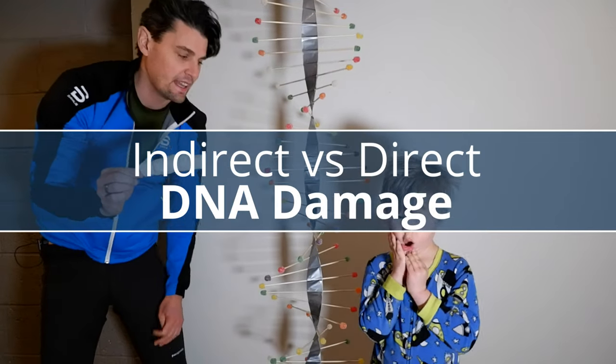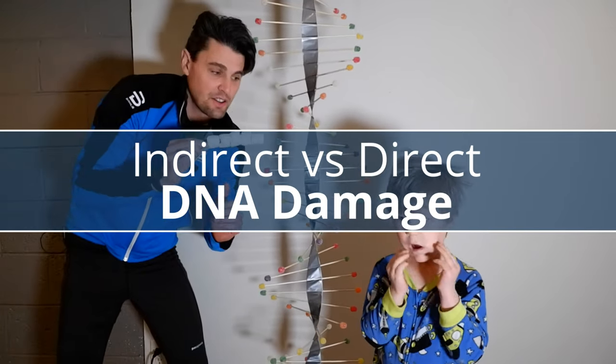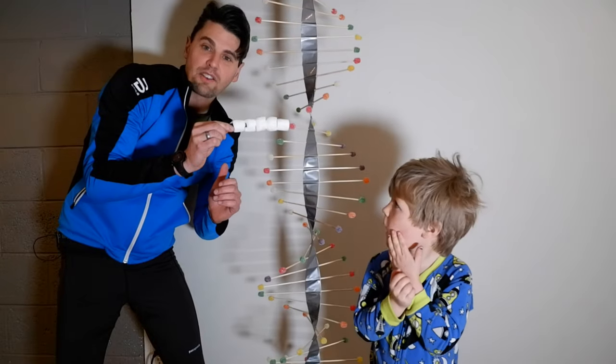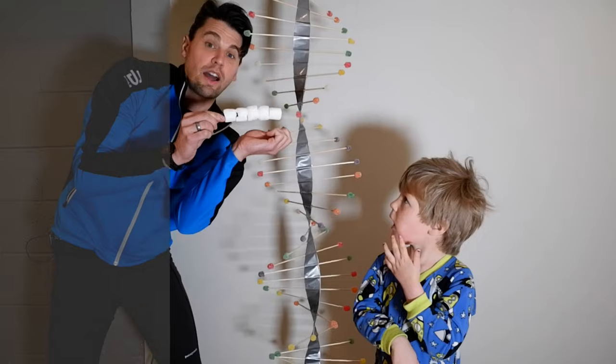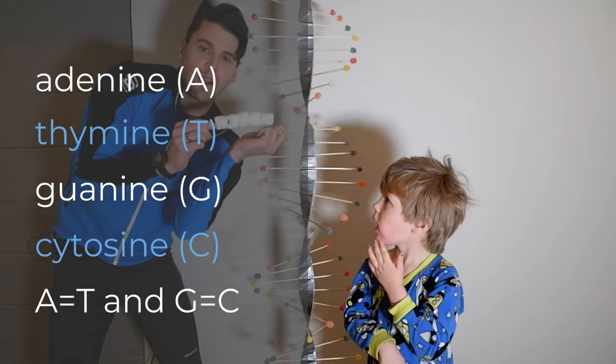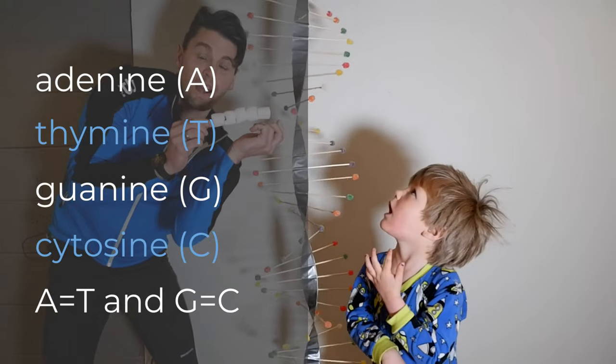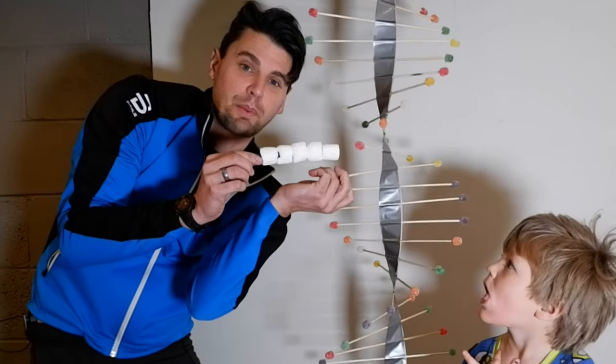The electron can either hit the DNA directly. So if the electron hits that DNA directly and knocks out what we call a base pair. So remember adenine, thymine, guanine, and cytosine. Those are our base pairs in DNA.